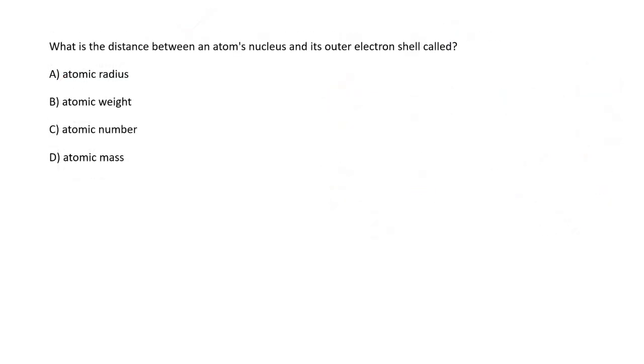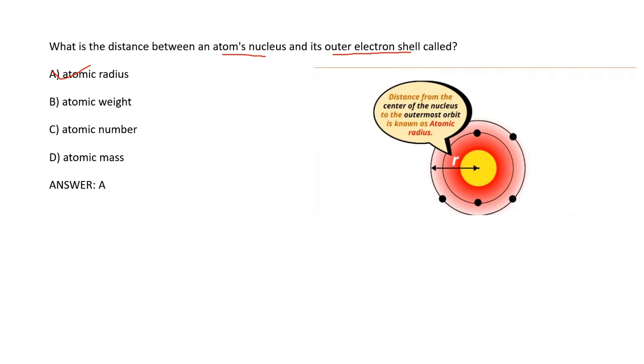Next question: What is the distance between an atom's nucleus and its outer electron shell called? And the right answer is atomic radius. So option A is your right answer. Here in this diagram you can see the nucleus in the center, where most of the mass is concentrated.